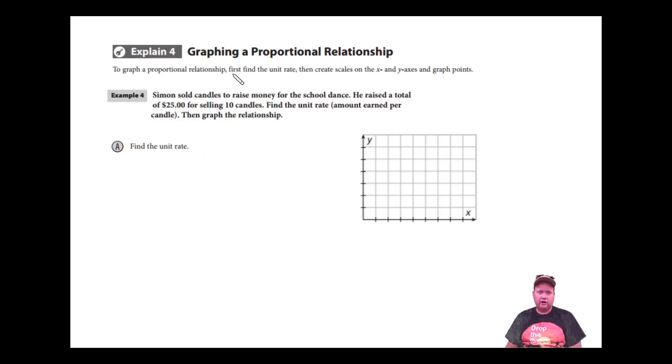We're going to tackle graphing a proportional relationship. A proportional relationship has a couple of characteristics. The first thing is that it starts at 0. That means in this problem, we're selling candles to raise money. If I sell no candles, I make no money. The second characteristic is that when you graph it, it is a straight line.